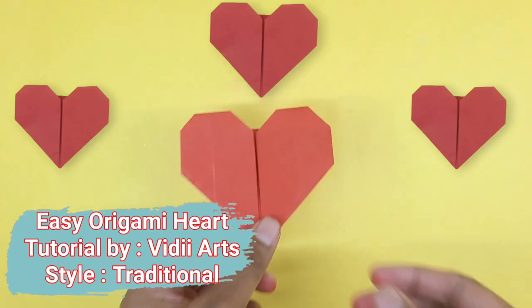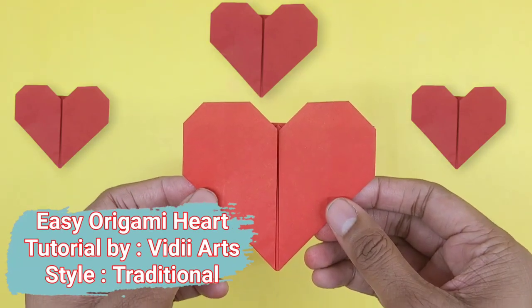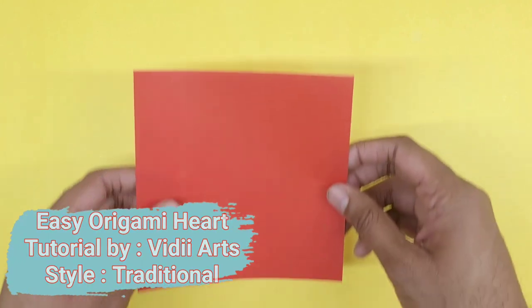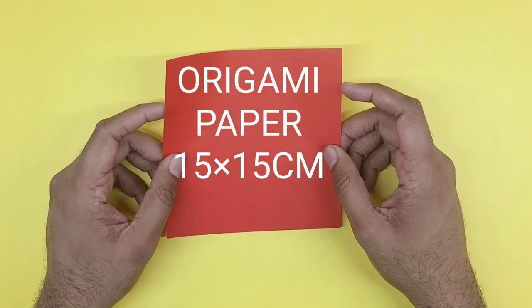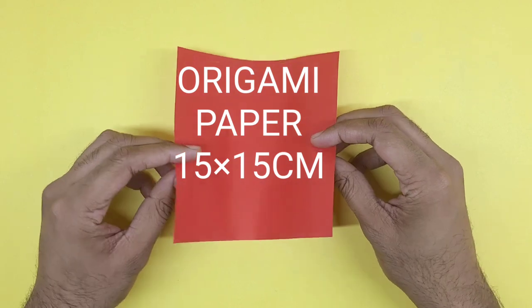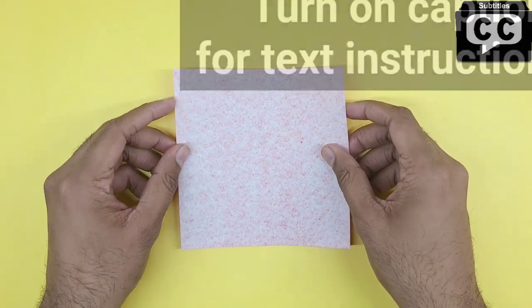Easy Origami Heart Tutorial by Vidyai Arts, traditional style. Start with a square 6 inches by 6 inches, 15 centimeters by 15 centimeters, origami paper color side down.